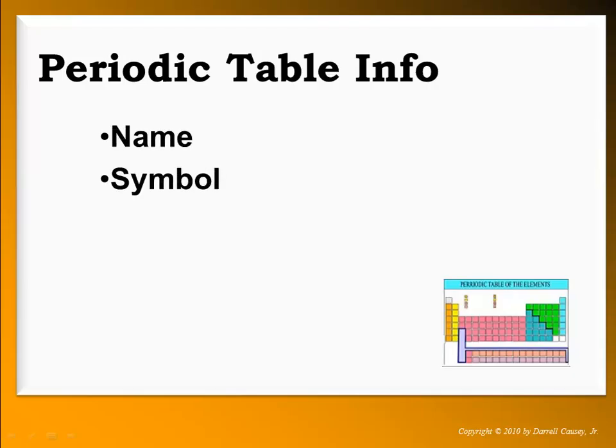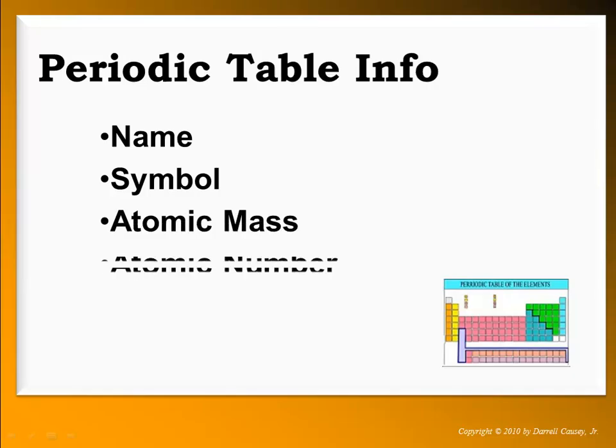Here's some things that right off the bat we can learn about the periodic table: the name, the symbol, the atomic mass, and the atomic number of an element. All four of these things are on the major periodic tables. Now there's some periodic tables that have everything on it and they almost get so cluttered they become unusable, but a nice simple periodic table with the name, symbol, atomic mass and atomic number will work really well for you.